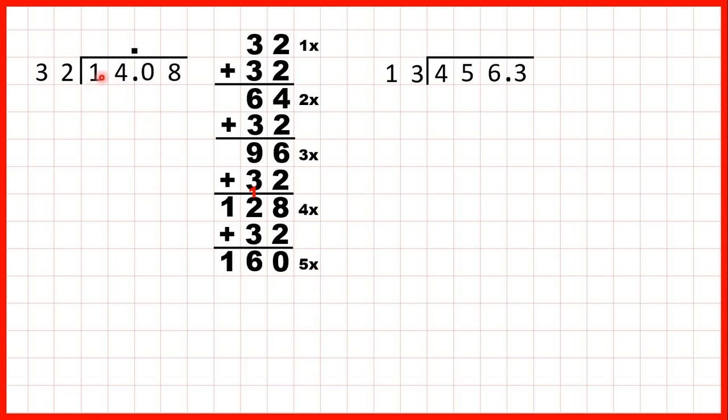So if we take the first two digits together, we have 14. But that's less than 32. So what we need to do here is take the first three digits together and divide 140 by 32. So we need a number in the 32 times table that's as close to 140 as possible, but not more than 140.